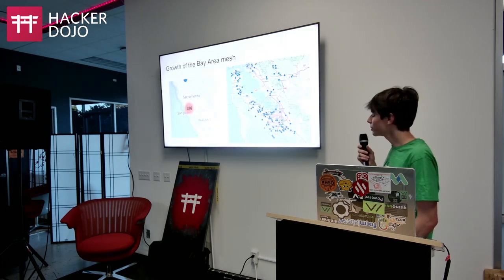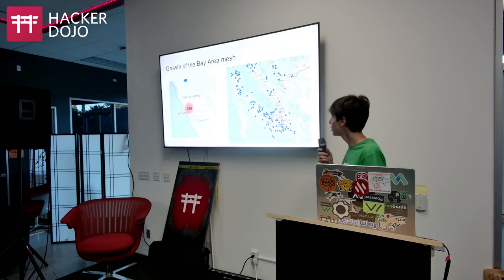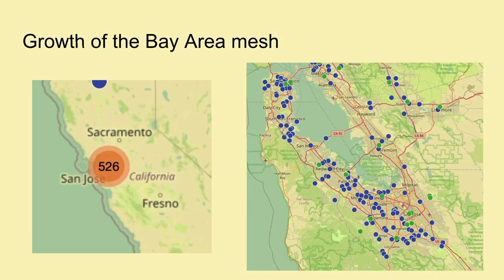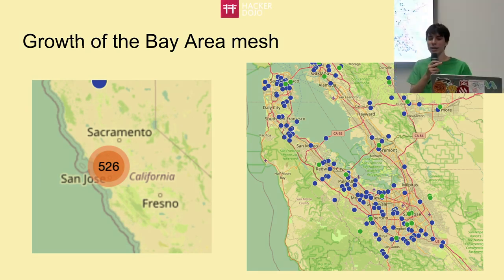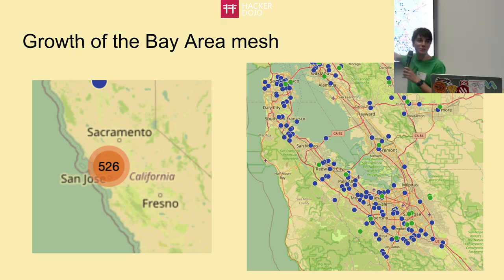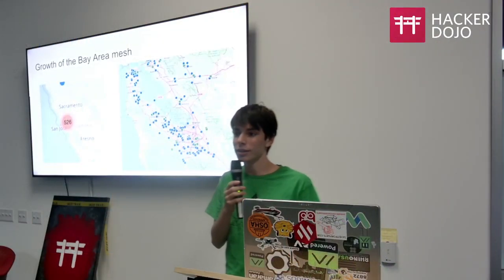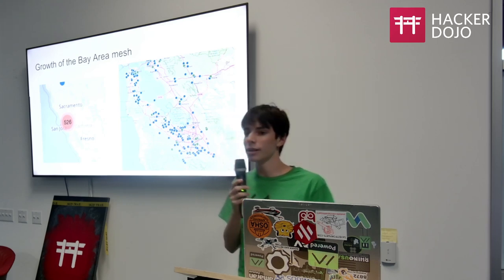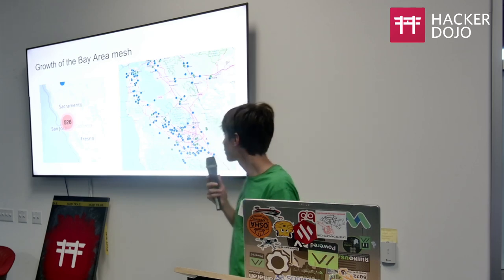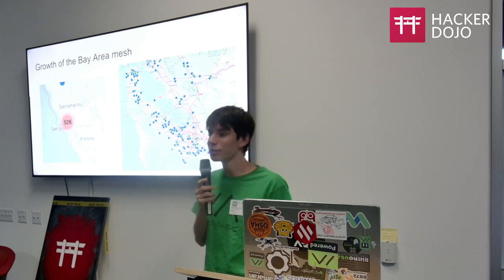A little bit about the growth of the Bay Area mesh — it's been crazy the past year. I think it was around 50 nodes a year ago and now it's like 500, including Sacramento. I think we beat out SoCal on node count, but we didn't beat them on Discord. Southern California has about 700 Discord members and we have 530, so we have more nodes but fewer people in our Discord.